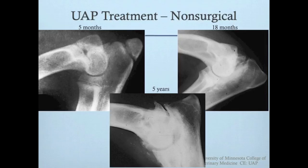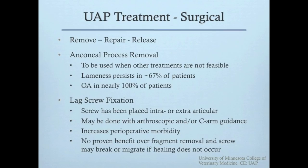This series of lateral radiographs from a German Shepherd with a UAP treated non-surgically shows progression to severe elbow osteoarthritis over time. The dog had intermittent mild to moderate lameness over five years of management. Surgical management options can be categorized as removal, repair, or release. Fragment removal is somewhat unpredictable. Compiling results from three retrospective studies, only 33% of dogs had no lameness on re-examination, 47% had improved but lameness was still present, and 20% had no improvement with persistent lameness.